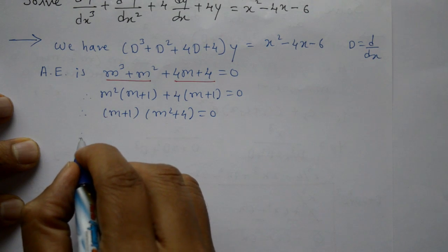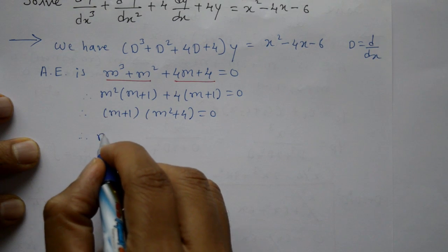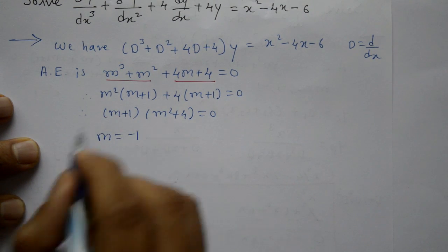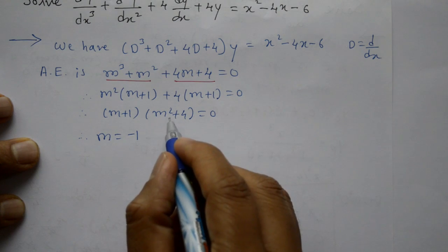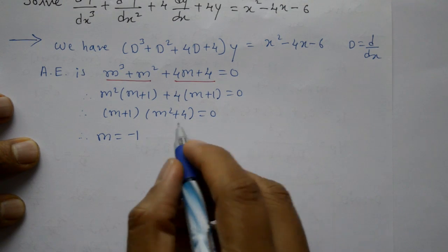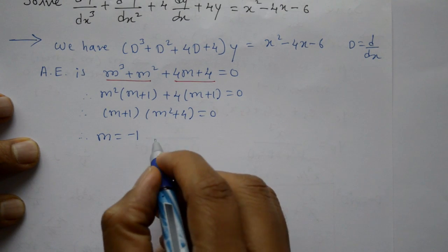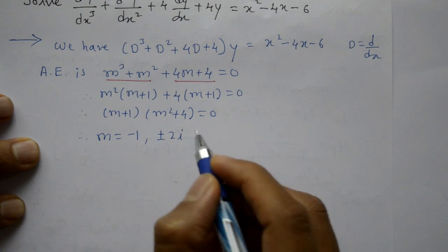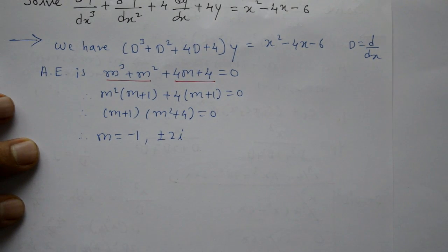Now first factor gives m = -1. Second factor: m² + 4 = 0, so m² = -4, giving m = ±2i. These are complex roots.